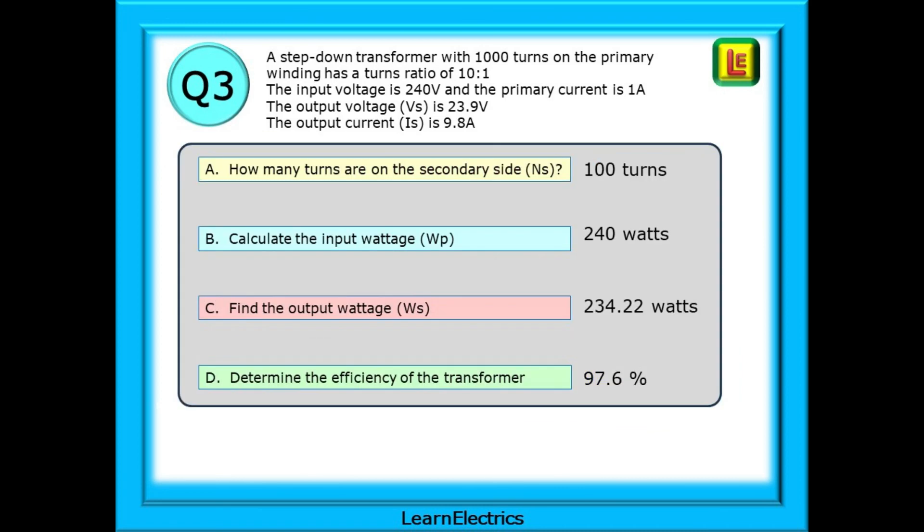All four answers then. Part A, how many turns are on the secondary side NS? 100 turns. Part B, calculate the input wattage WP and this is 240 watts.